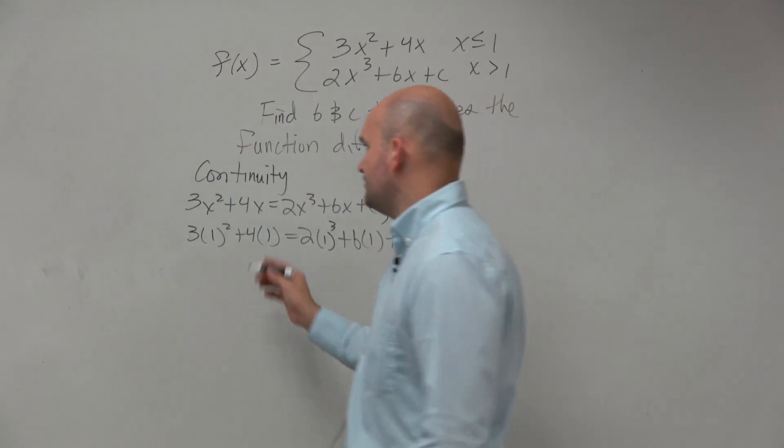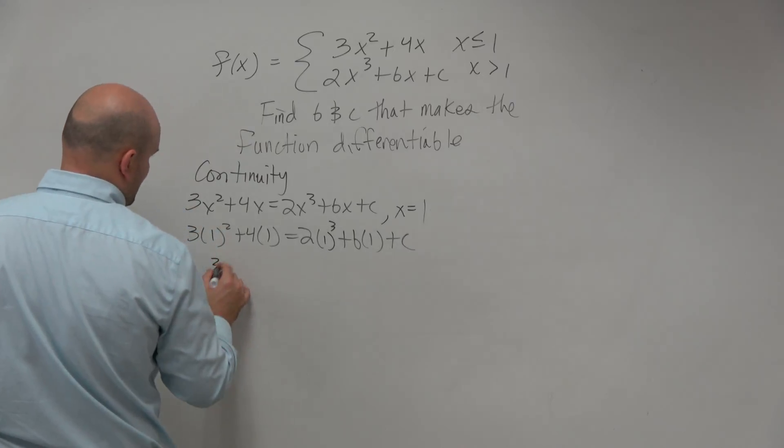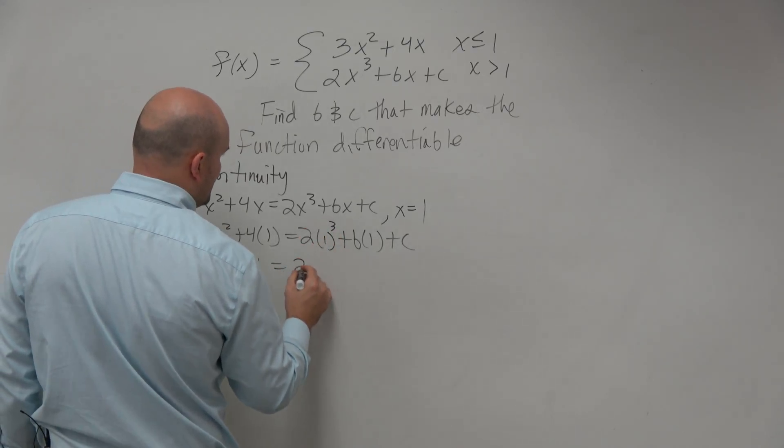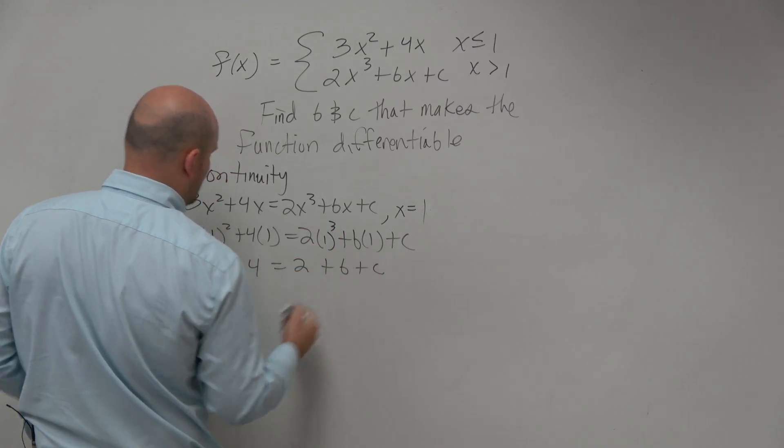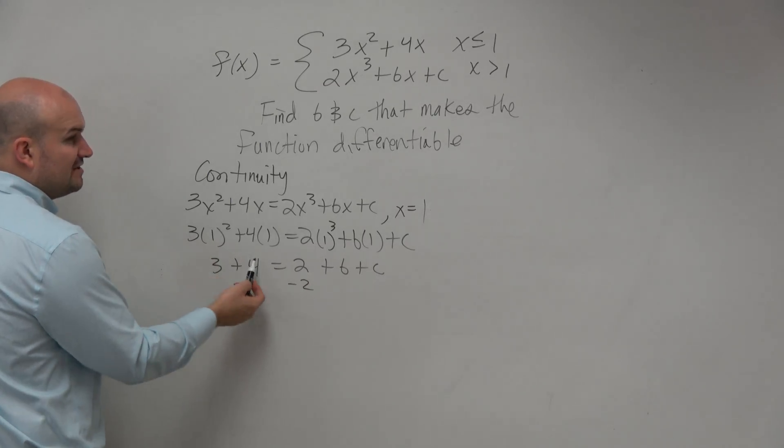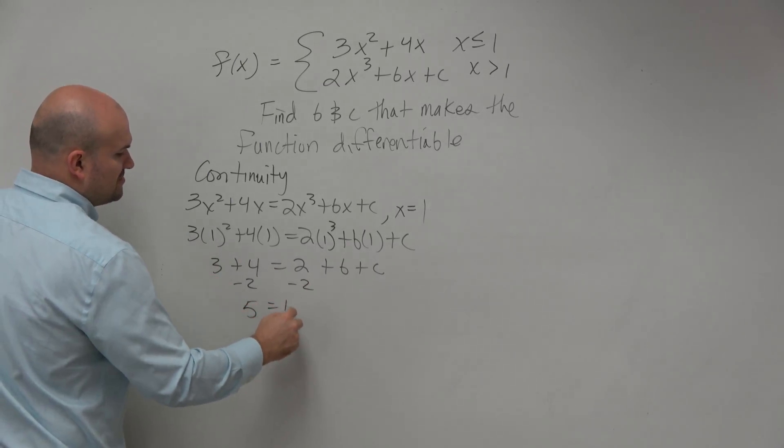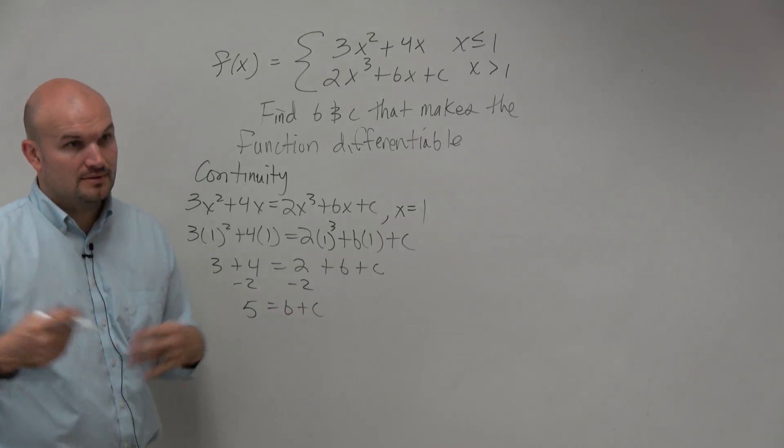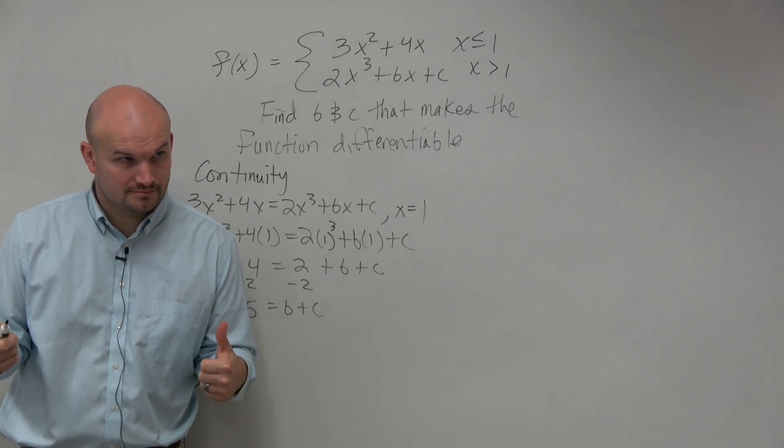OK, so just go ahead and do some mental math here. We're going to have 3 plus 4 equals 2 plus b plus c. Add them, get this to the other side. 3 plus 4 is 7, minus 2 is 5, equals b plus c.